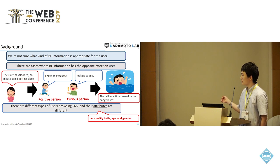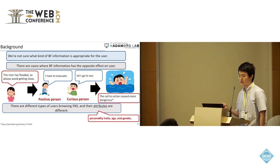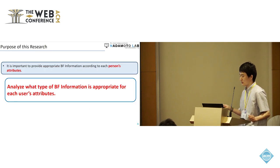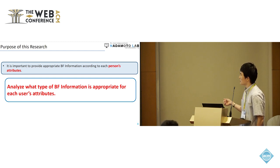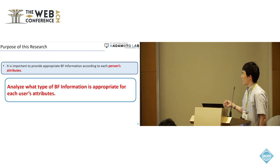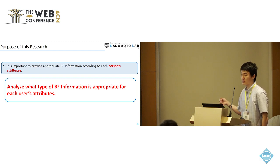In addition, there are different types of users browsing SNS, and their attributes such as personality trait, age, and gender are different. So it is important to provide appropriate information according to each person's attribute. The purpose of this research is to analyze what type of BF information is appropriate for each user's attribute.